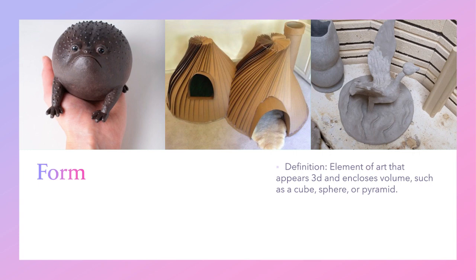Form is an element of art that appears three-dimensional and encloses volume, such as a cube, sphere, or pyramid. It is important to note that forms can sometimes be drawn to look like 3D shapes rather than actually being 3D. The examples shown are cardboard and ceramic — physical 3D things shown as images, which means they still count as forms.